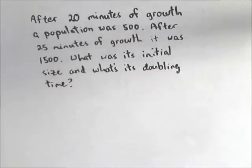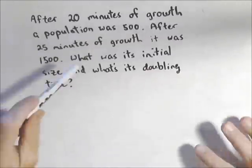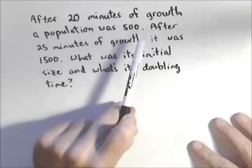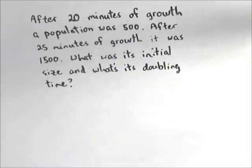In this video, we're going to talk about actually coming up with an initial population given some information. After 20 minutes of growth, a population is measured and found to have 500 units. After 25 minutes of growth, it's 1,500. We want to find the initial size.